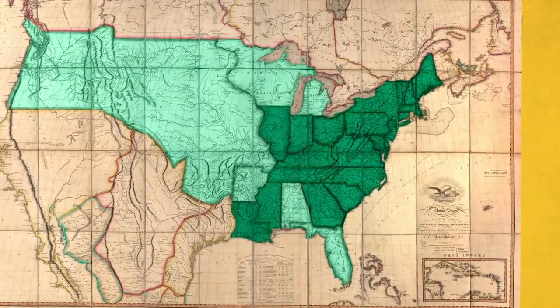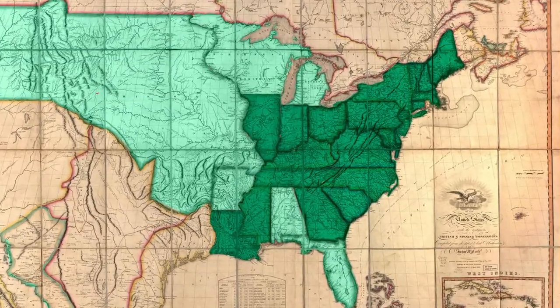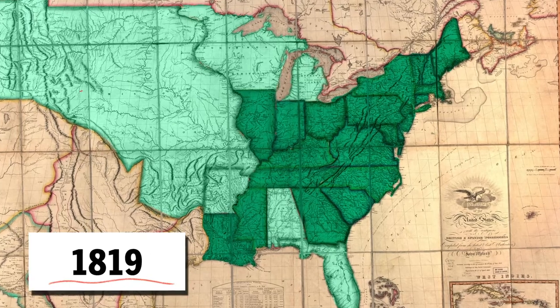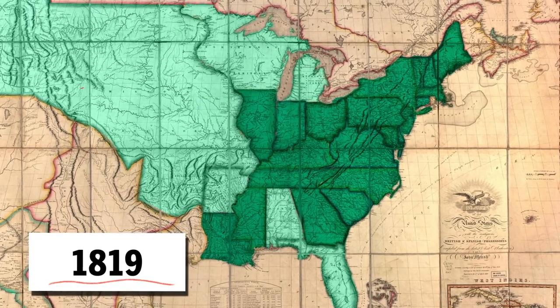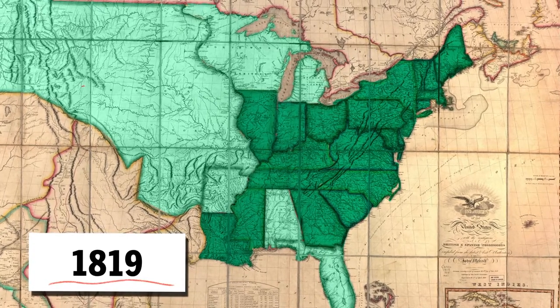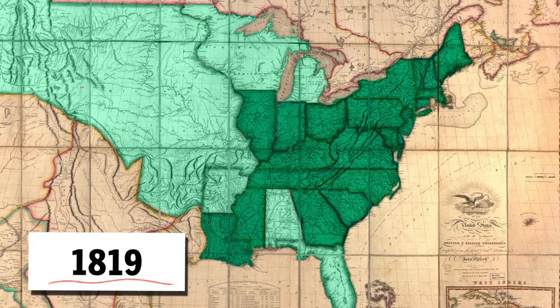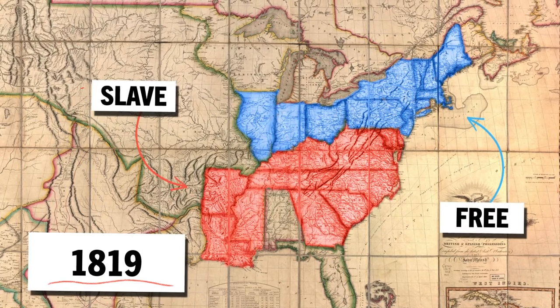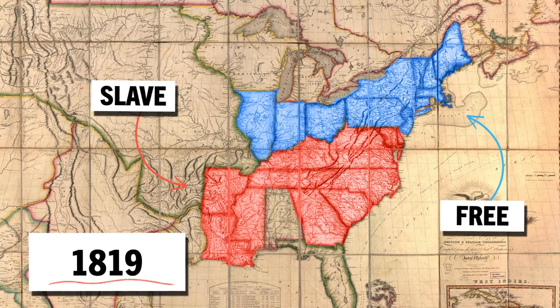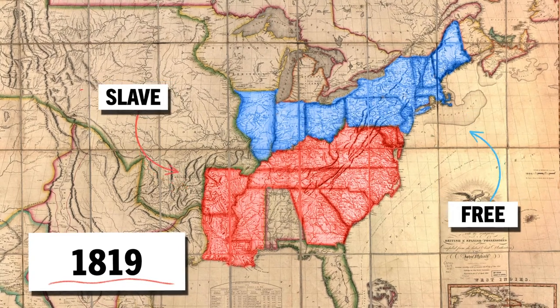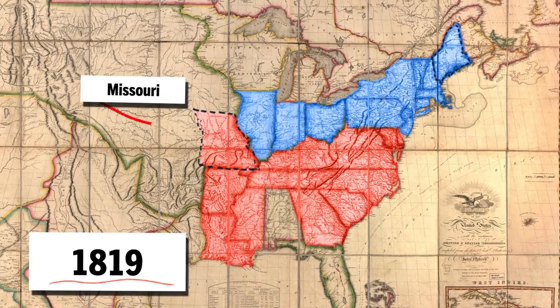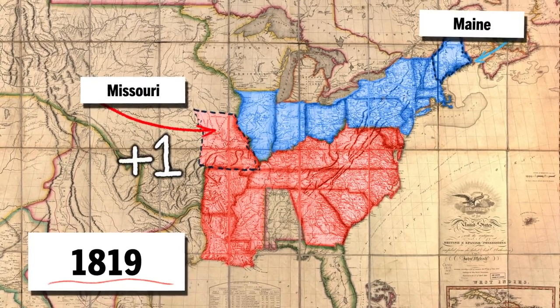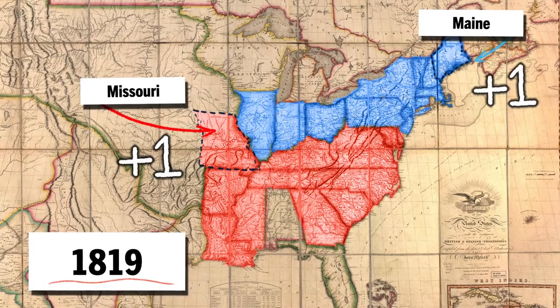To understand what happened, we need to go back to 1819. Back then, the United States had an equal number of free and slave states — 11. But as new states joined the Union, the balance tipped back and forth.